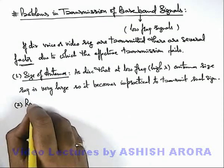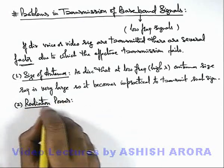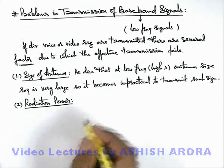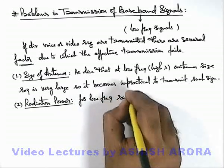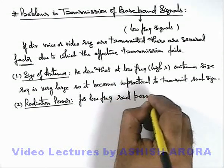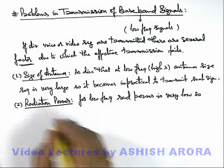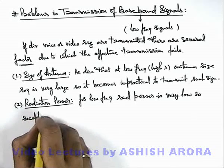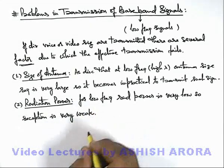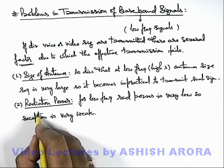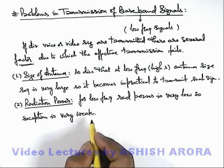Another problem is radiation power, which we have also studied. Radiation power from an antenna is inversely proportional to lambda squared. So for low frequencies, radiation power is very low, meaning the range will be less, or we can say reception is very weak, because sufficient power will not be transmitted to the receiver and reproduction of signals won't be possible.